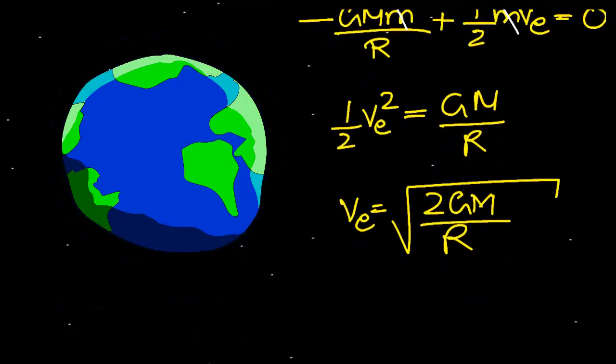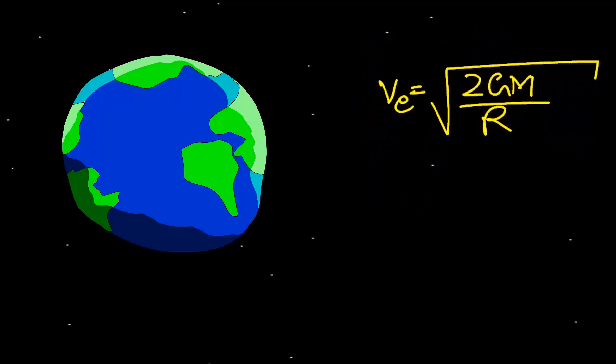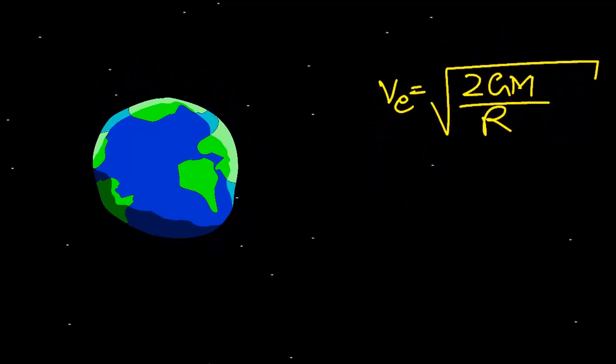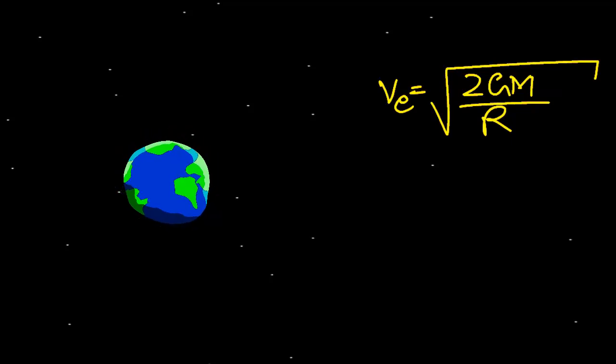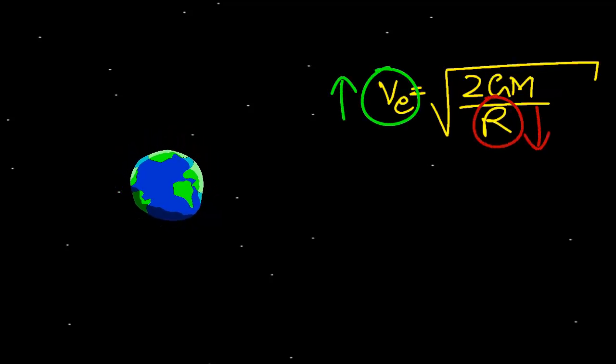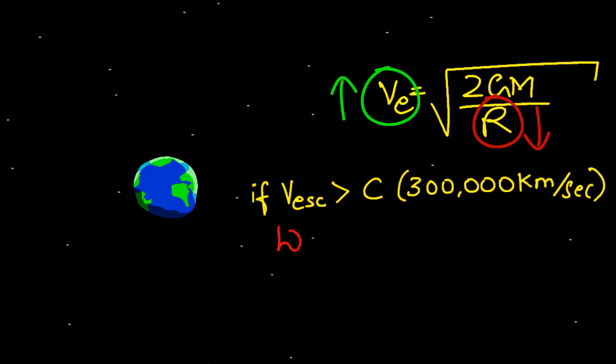To give you something more for your money, what if we shrink our earth or any planet, keeping all its mass compressing it? Then clearly since r decreases, the escape speed increases. And it is interesting to note, if this escape speed becomes more than the speed of light in vacuum, which is c, which is 300,000 kilometers per second, then light cannot escape this object. Then our earth would officially become a black hole.